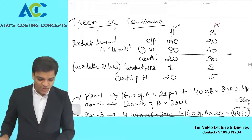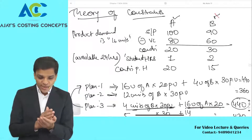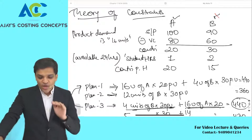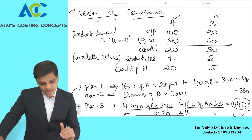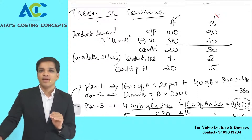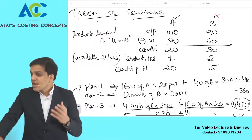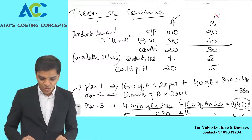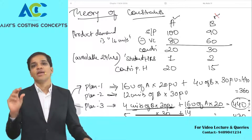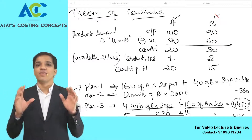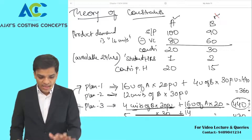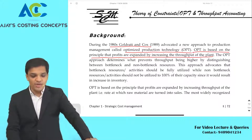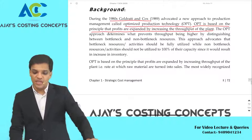This is how theory of constraints was implemented — whatever your constraints are, make sure you do effective or optimum utilization of those constraints. In IPCC, contribution per unit is where the question stops. In CA Final, contribution per unit is merely the starting point; then you evaluate on the basis of constraints to find contribution per hour. Highest contribution per hour is the point where you earn the highest profits — that is productive utilization of resources.